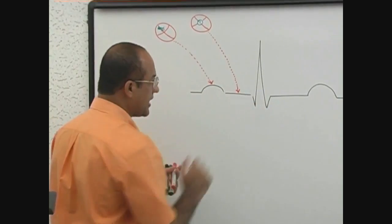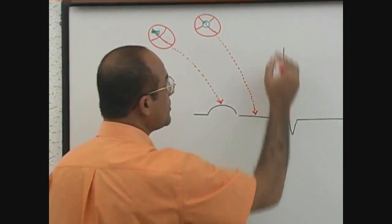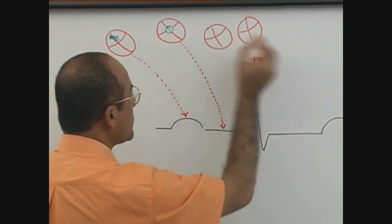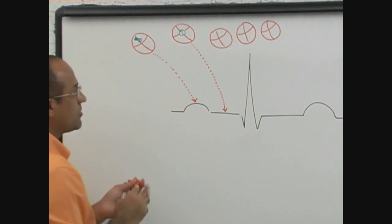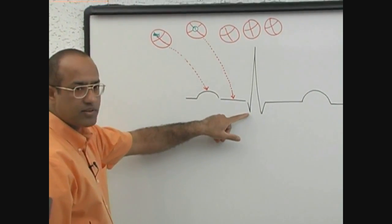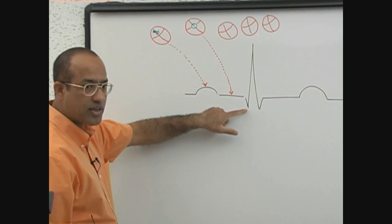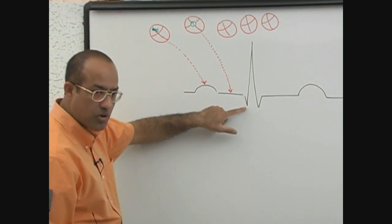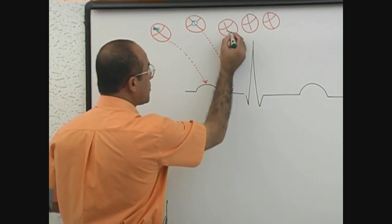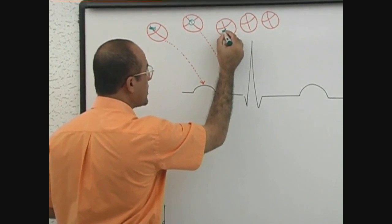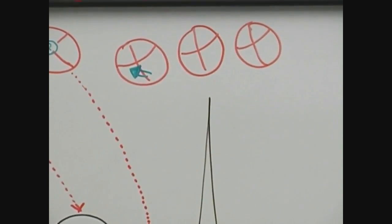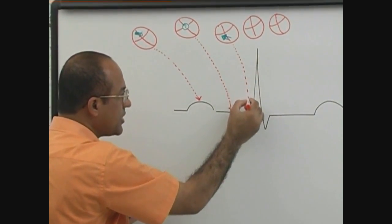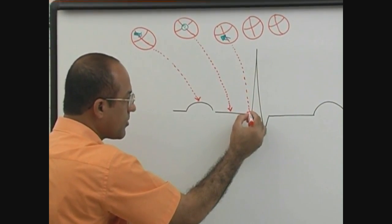Then we come to QRS complex. These are three waves, so we have three hearts signifying three electrical activities. Q wave tells the onset of spread of depolarization current in the ventricle. First of all, the ventricular septum undergoes depolarization. Ventricular septum depolarization is a small vector moving upward and rightward. This vector is making the Q wave.